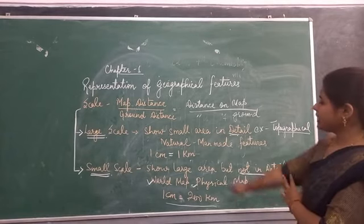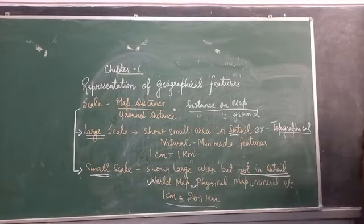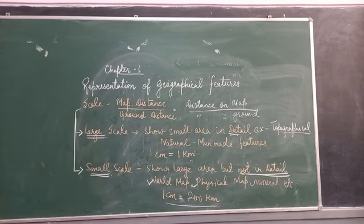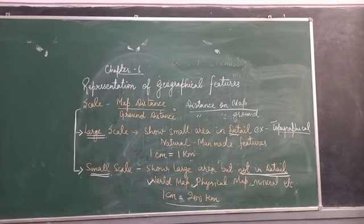The topographical map shows natural and man-made features of any area in large detail. Natural features include rivers, mountains, and hills. Man-made features are things like buildings, hospitals, schools, and temples. In the topographical map, these features are shown with the help of conventional signs and symbols.